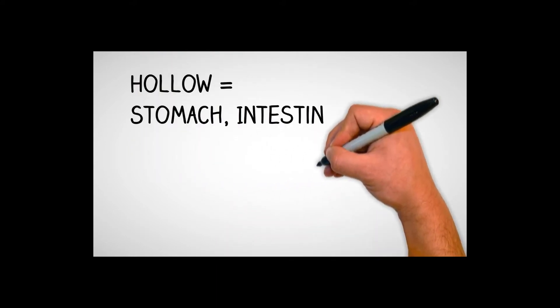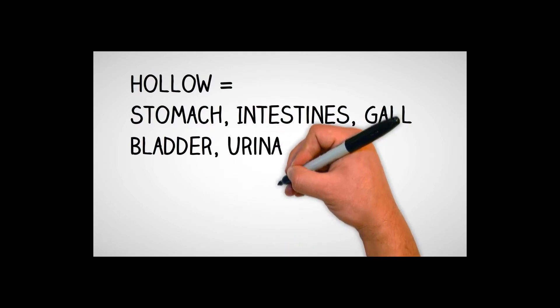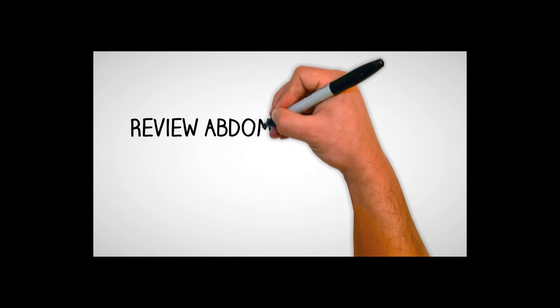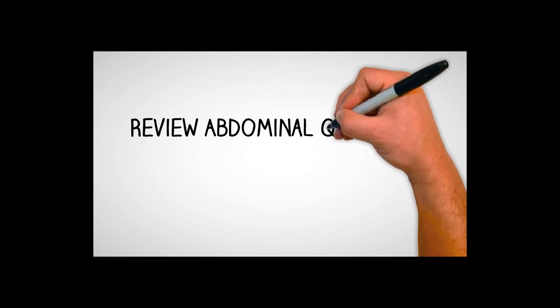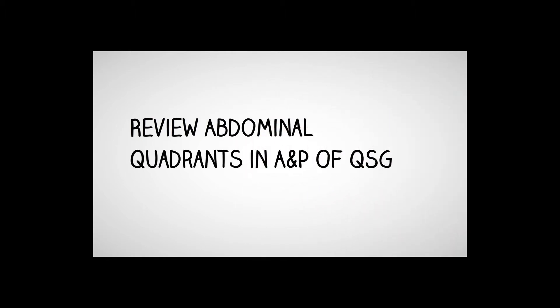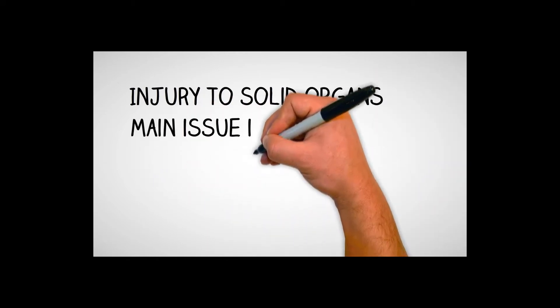Our hollow organs consist of the stomach, the intestines, gallbladder, your urinary bladder, even the uterus and the uterus. So review your abdominal quadrants in your book, in your AMP sections, or even in the previous quick study guide videos that we did early on.